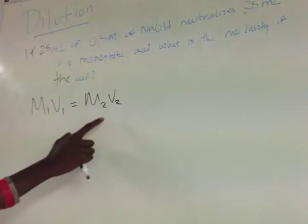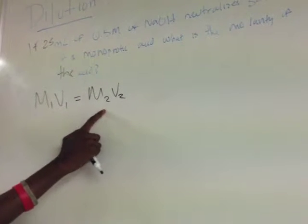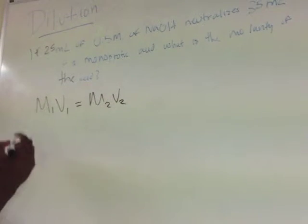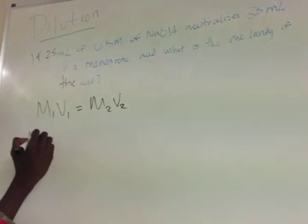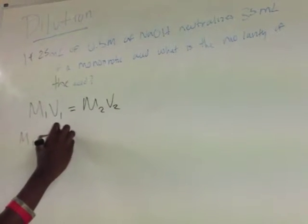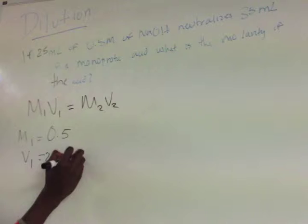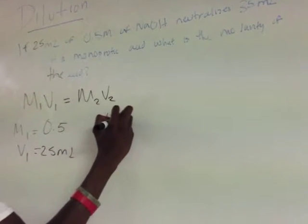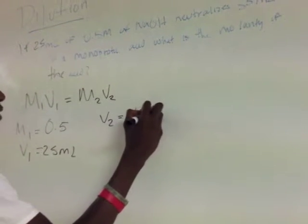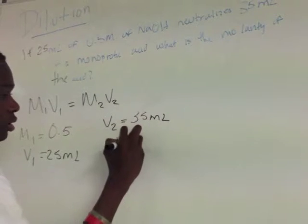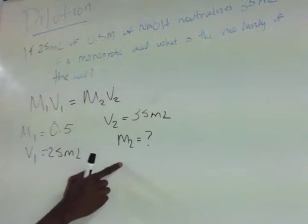Since we're solving for the molarity of the second acid, we plug in what we have. M1 equals 0.5, V1 equals 25 milliliters, V2 equals 35 milliliters, and M2 is unknown. That's what we're solving for.